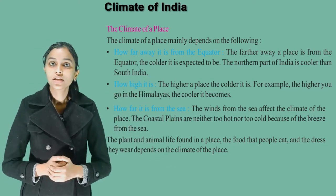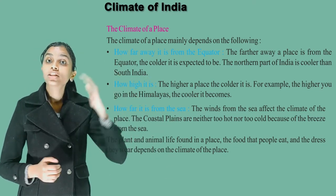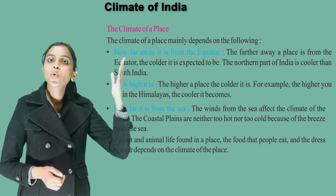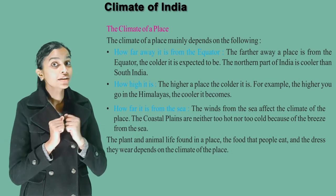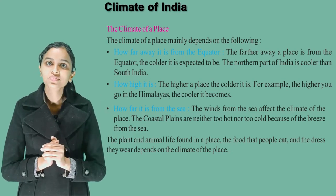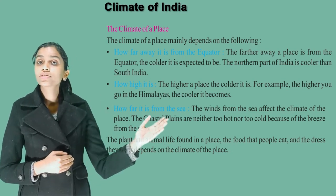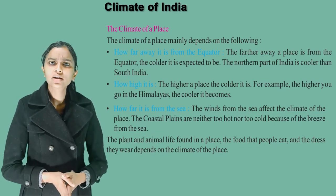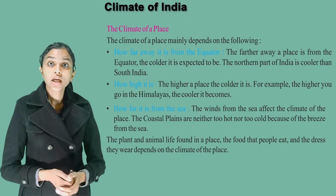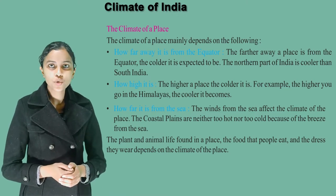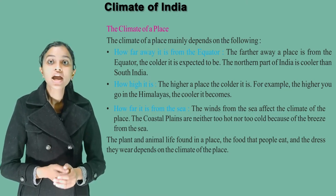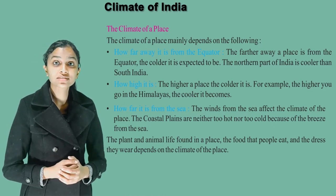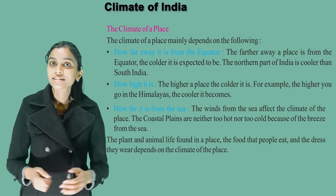How high is the place? The higher the place, the colder it is. For example, the higher you go in the Himalayas, the cooler it becomes. How far it is from the sea — the winds from the sea affect the climate of the place. The coastal plains are neither too hot nor too cold because of the breeze from the sea. The plant and animal life found in a place also depends on climate.